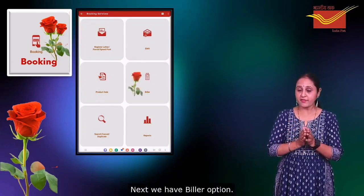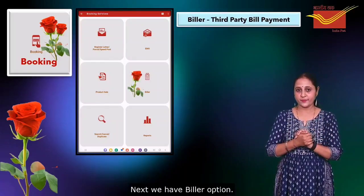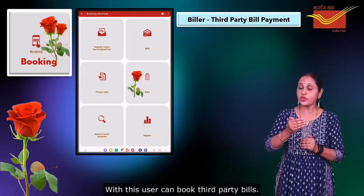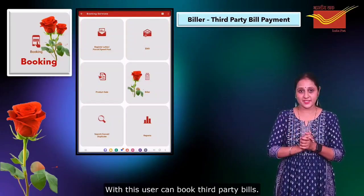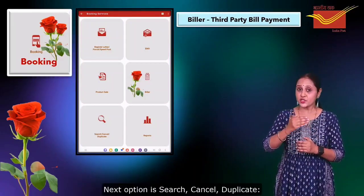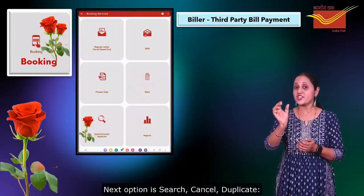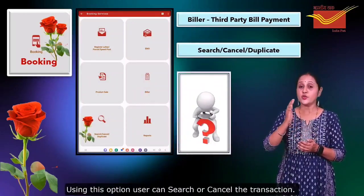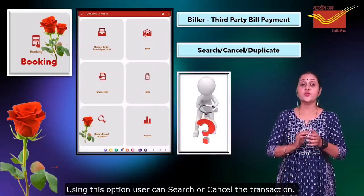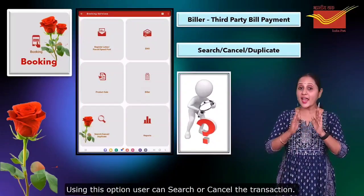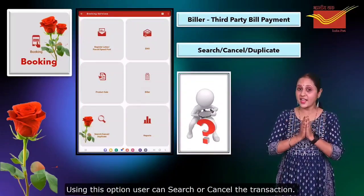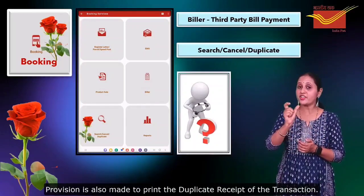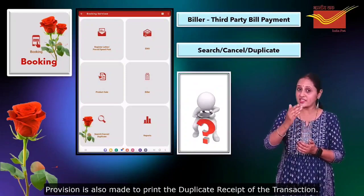Next we have the Biller option. With this, the user can book third-party bills. The next option is Search, Cancel, Duplicate. Using this option, the user can search or cancel a transaction. Provision is also made to print the duplicate receipt of the transaction.